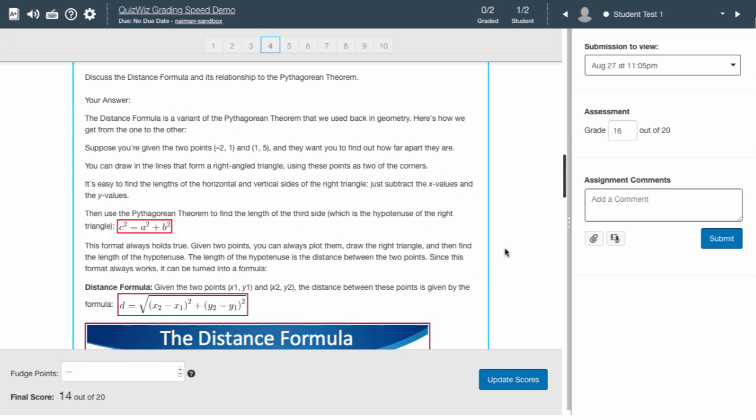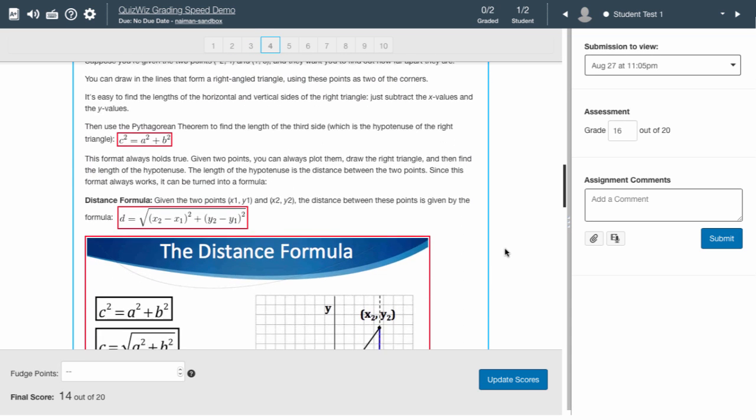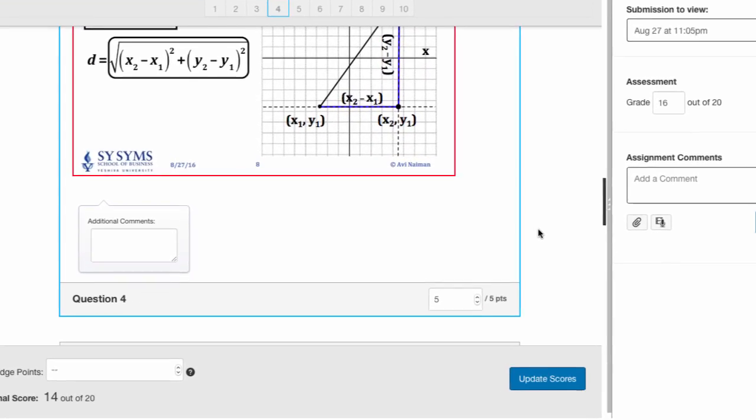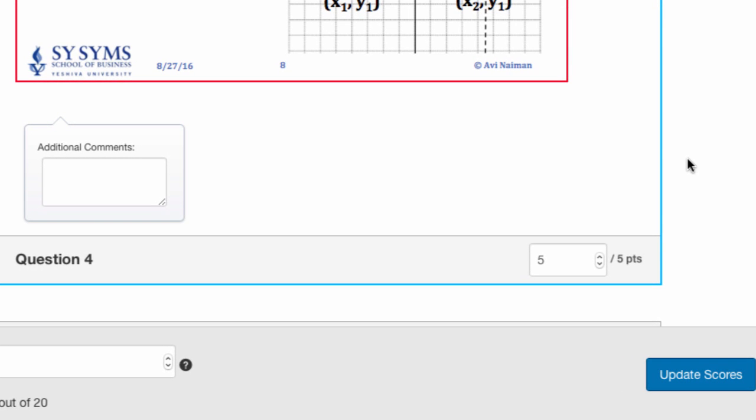This long answer deserves four out of five points. As QuizWiz has duplicated the point box at the end of the answer, there is no need to scroll back to the beginning of the question. Furthermore, only one point needs to be deducted, rather than having to assign four points.